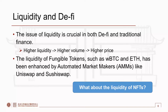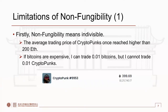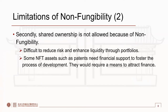What about the liquidity of NFTs? The non-fungibility of NFTs has led to some restrictions on liquidity. First, non-fungibility means indivisible. The average trading price of CryptoPunks once reached higher than 200 ETH. If Bitcoin is expensive, I can trade 1% of Bitcoin, but I can't trade 1% of CryptoPunks. Secondly, shared ownership is not allowed because of non-fungibility. Therefore, it's difficult to reduce risk and enhance the liquidity of NFTs through portfolios.